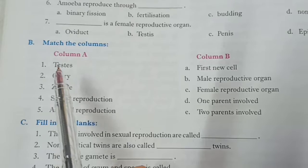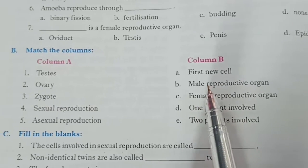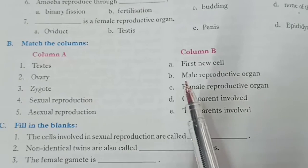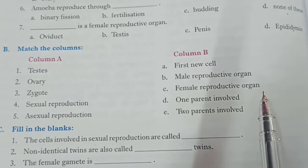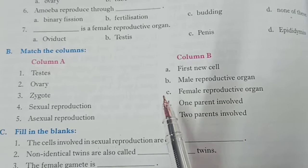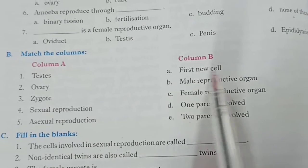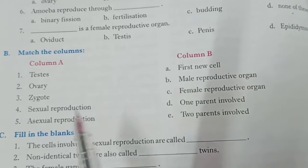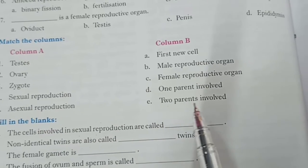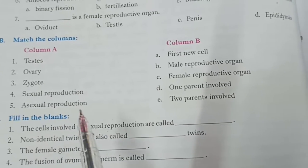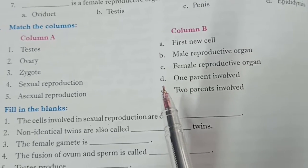Part B: match the columns. First — testes: it is a male reproductive organ, so match is B. male reproductive organ. Second — ovary: it is female reproductive organ, so match is C. female reproductive organ. Third — zygote: it is the first new cell, so match is A. first new cell. Fourth — sexual reproduction: two parents are involved, so match is two parents involved. Fifth — asexual reproduction: one parent is involved, so match is D. one parent involved.